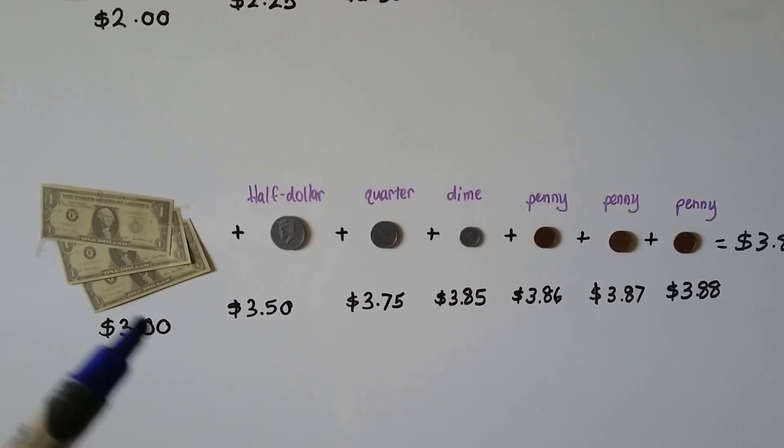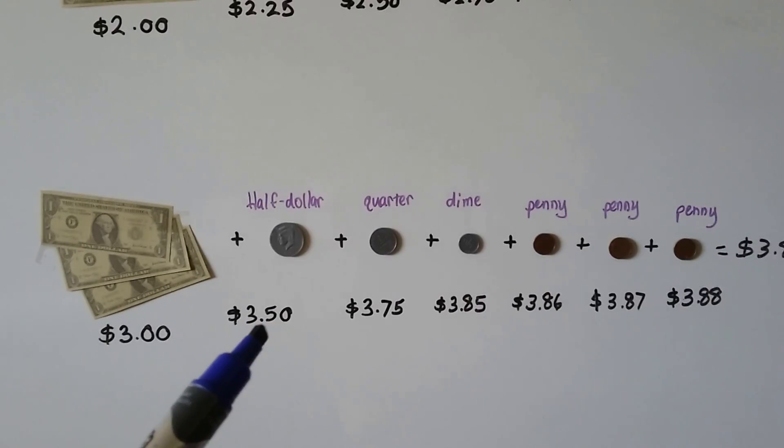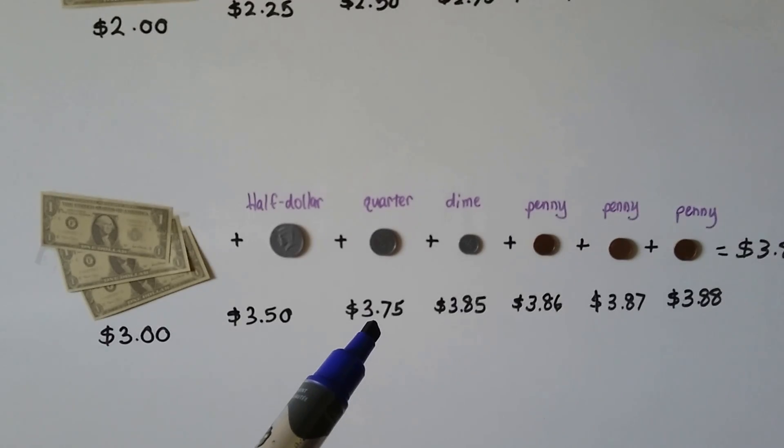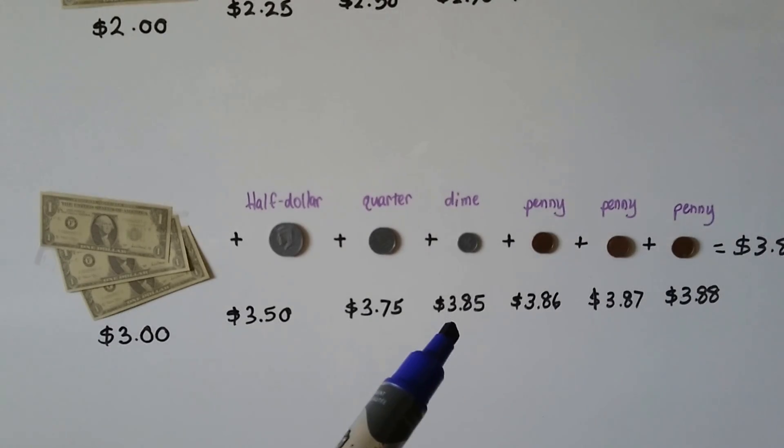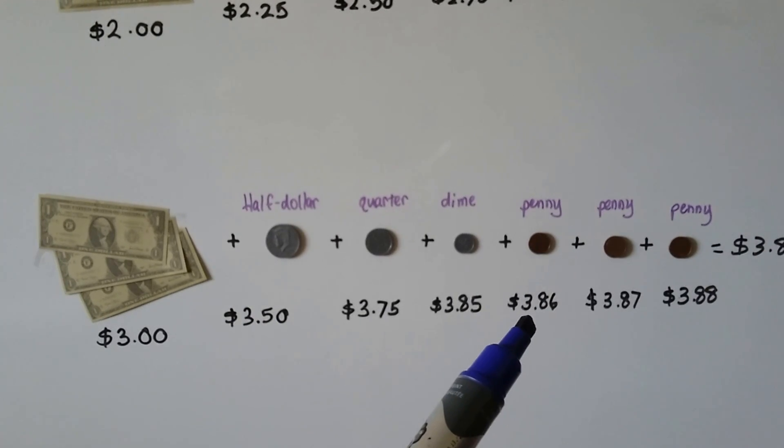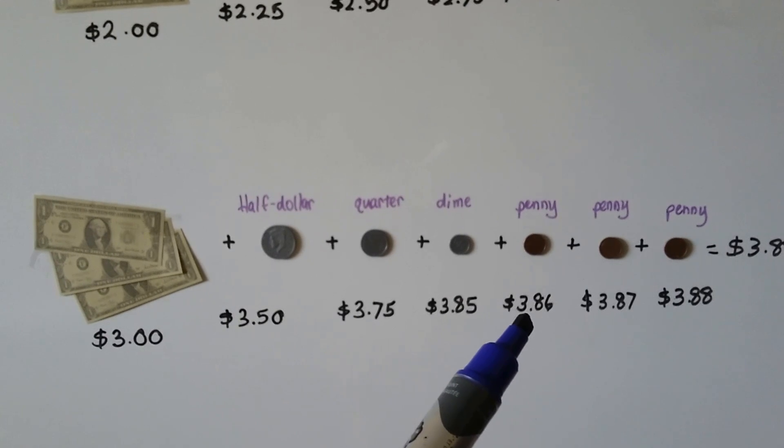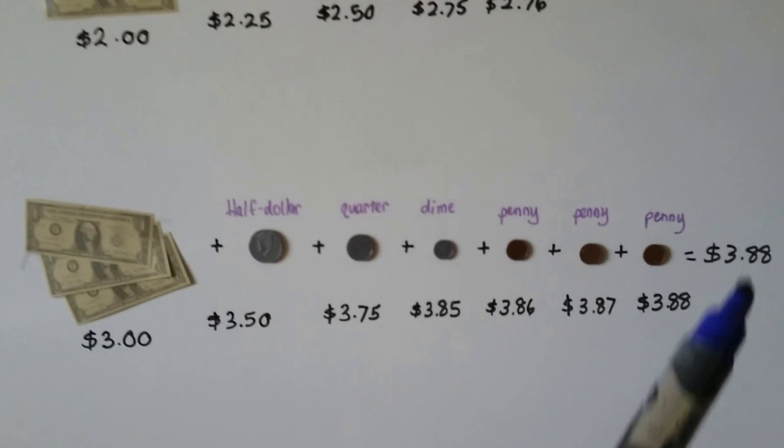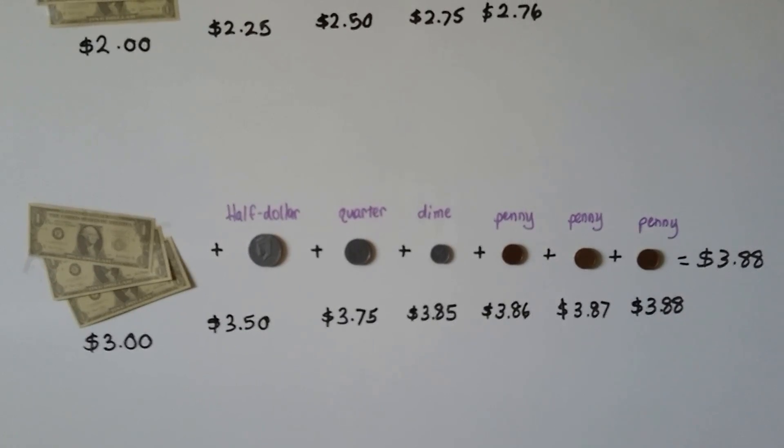So we have three dollars and with the half dollar, we have $3.50. Then with the quarter, we have $3.75. Plus the dime is $3.85. And with the pennies, we have $3.86, $3.87, $3.88, and our total is $3.88.